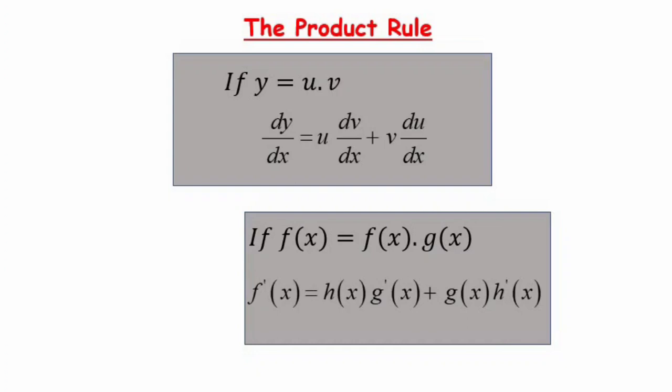The product rule states that if we have function y equal to u multiplied by v, then to find dy/dx it is equal to u·(dv/dx) plus v·(du/dx). That means we copy the first function and differentiate the other, then copy the other function and differentiate it.